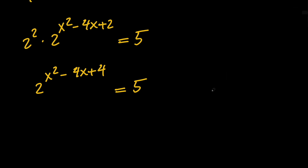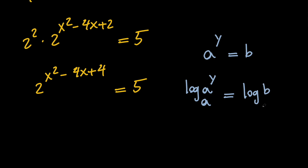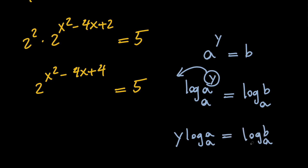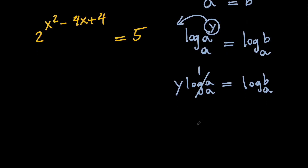Now, notice that whenever we have an exponent like a to the power of y, and it is equal to some number like b, and we want to solve for y, the very best thing we can do is to take the log of both sides with base a. So we're going to have log of a to the power of y with base a equals log of b with base a. We can take the power and bring it in front, giving us y times log a with base a equals log b with base a. But log a with base a is 1, so we have y equals log b with base a.